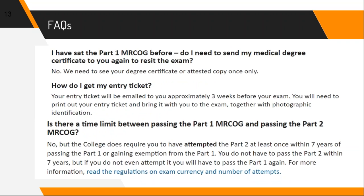If you have sat for MRCOG Part 1 before, you do not need to resend your medical degree certificates — just apply online. Your entry ticket will be emailed to you approximately three weeks before the exam. Print it and bring it to the exam center along with your passport or national identification card. The name on your ID must match the name registered with RCOG.